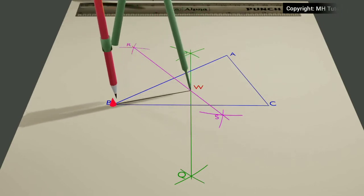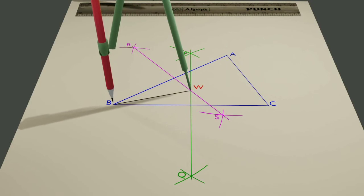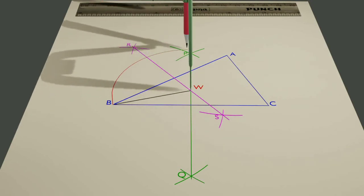At last, the required circumcircle can be drawn, taking W as circumcenter and WB as the circumradius.